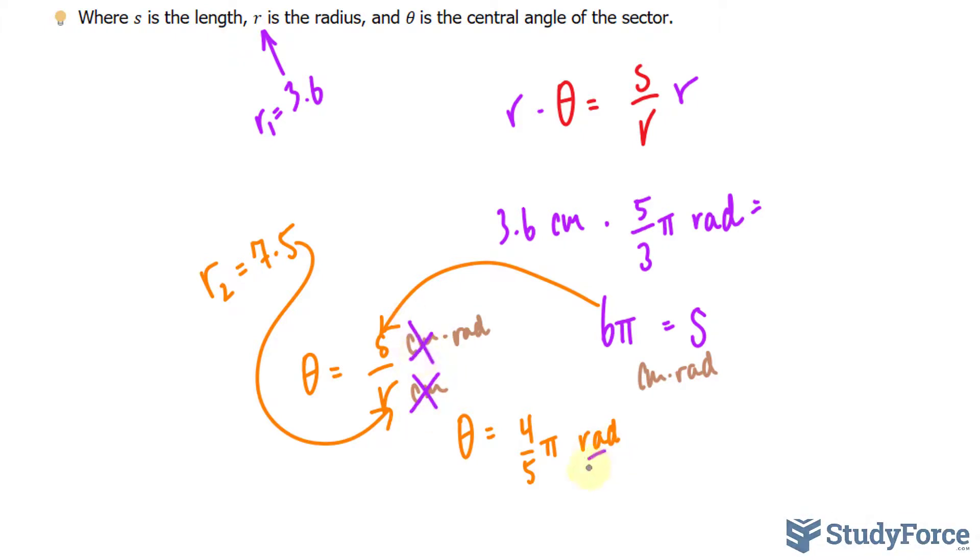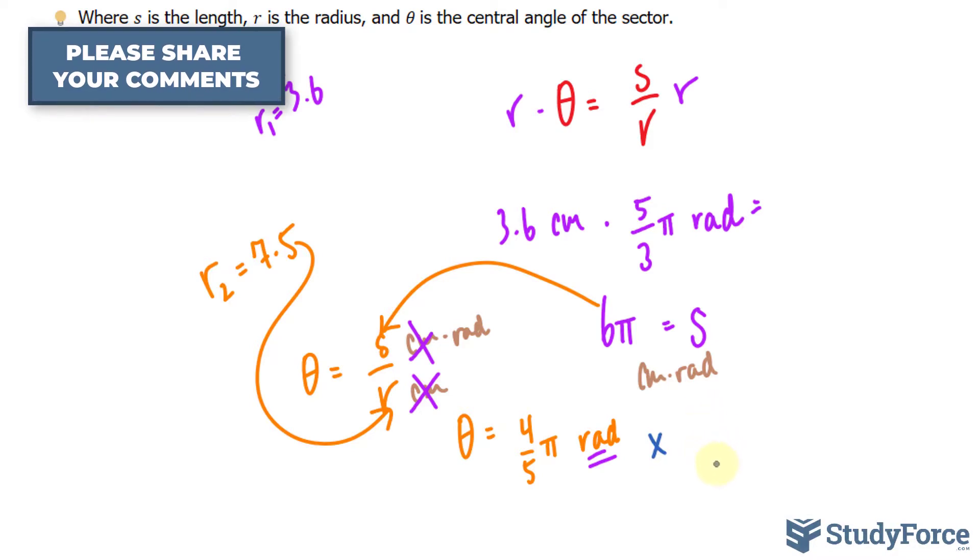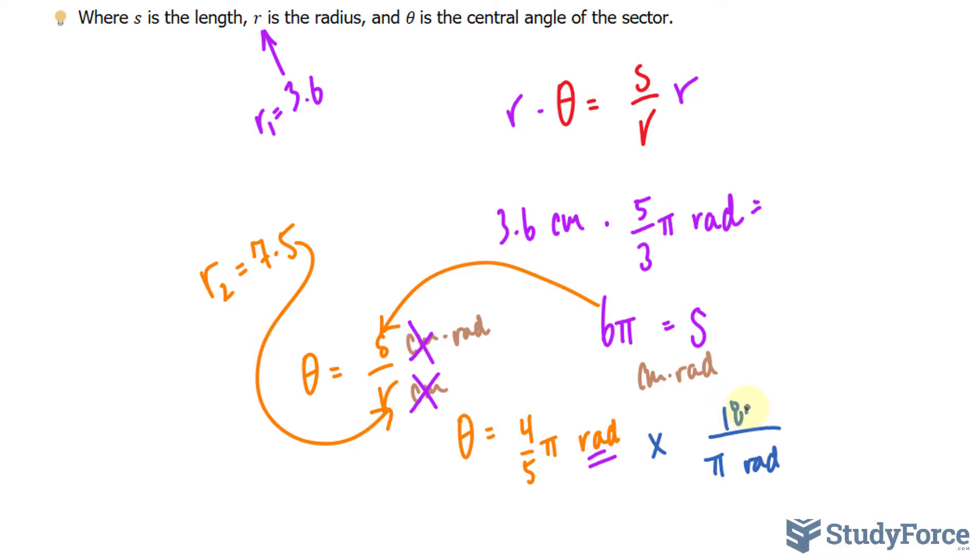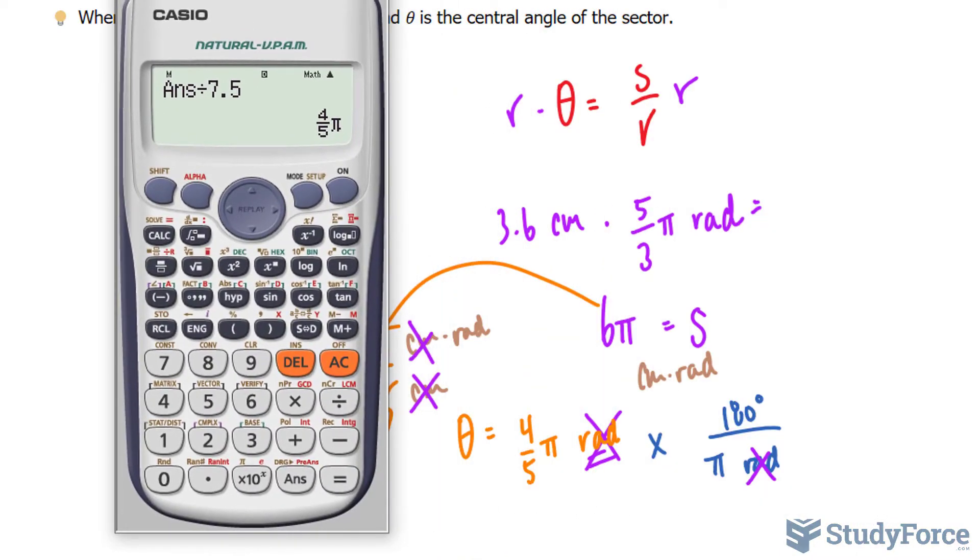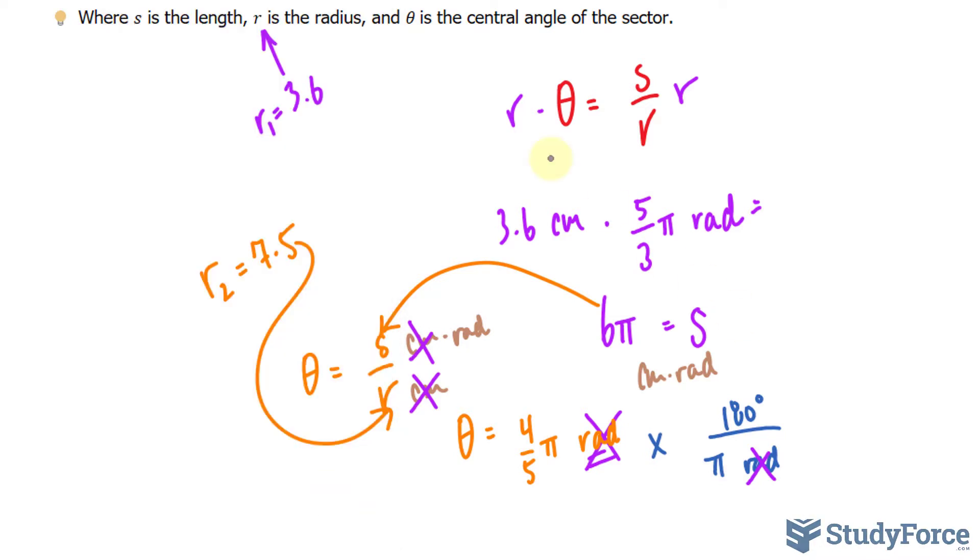To convert this back into degrees, we multiply this by the same conversion ratio as before. But this time I'll put pi radians underneath and 180 degrees at the top. The units now will cancel out. And using our calculator, we have 4 times 180 divided by 5 is 144. Even the pi cancels out. So 144 degrees is the amount that will be rotated for the larger gear.